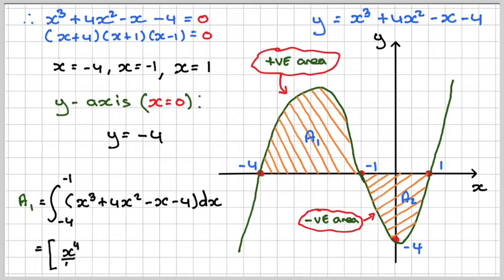Integrating, so x cubed is x to the 4 over 4. 4x squared is 4 over 3 x cubed. x will be minus 1 half x squared, and then minus 4x. And then the limits we put on the end here.